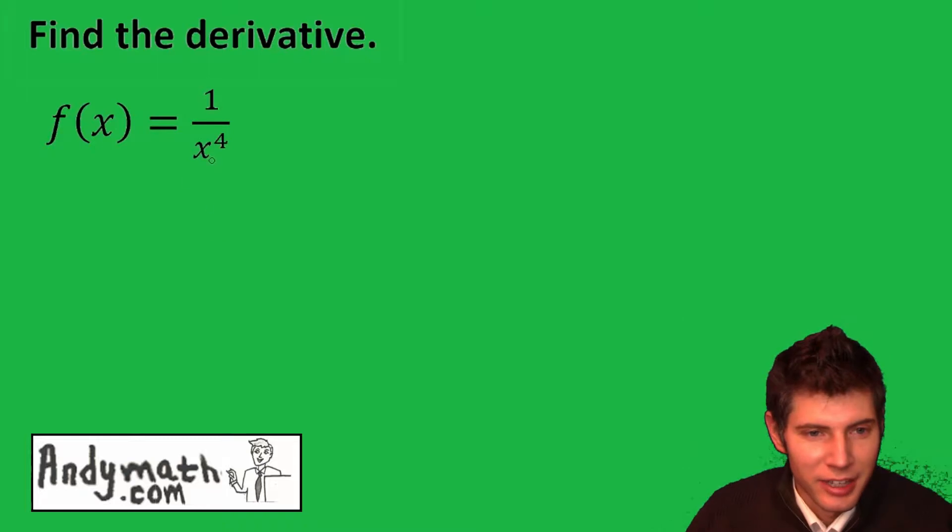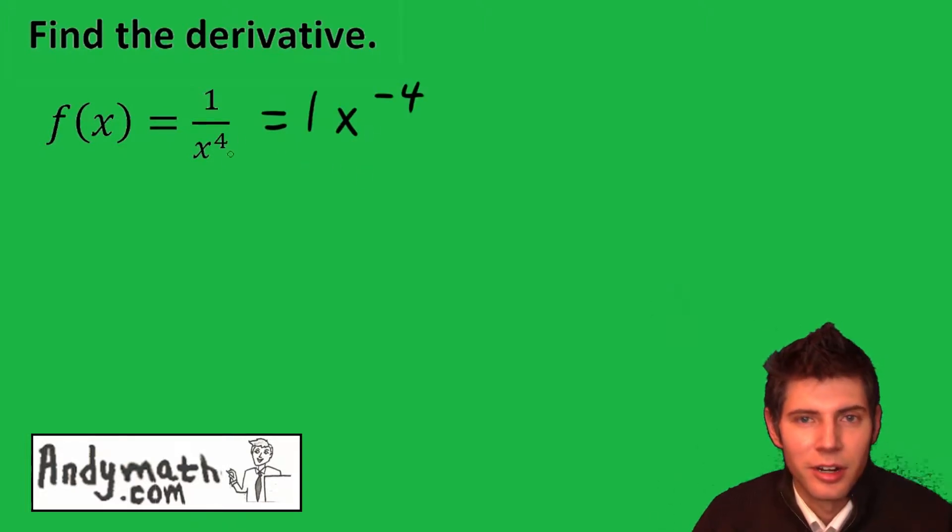So first thing I like to do is bring this x to the 4th to the top. So that's going to be x to the negative 4. And the 1's still there. So these mean the same things: x to the negative 4 or 1 over x to the 4th.